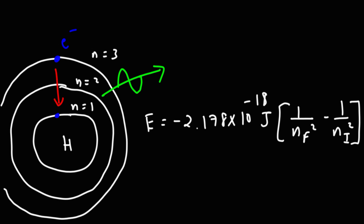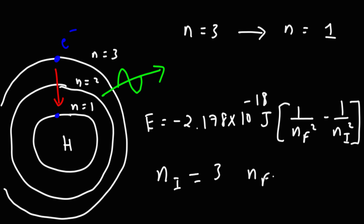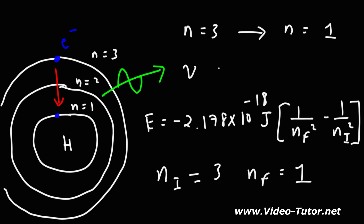For example, if an electron goes from the n equals 3 energy level to the n equals 1 energy level, then n-initial is 3 and n-final is 1. Plugging in gives the energy of the emitted photon. Once you know the energy, you can calculate the frequency using the formula frequency equals E over h, or calculate the wavelength by taking Planck's constant times the speed of light divided by the energy.